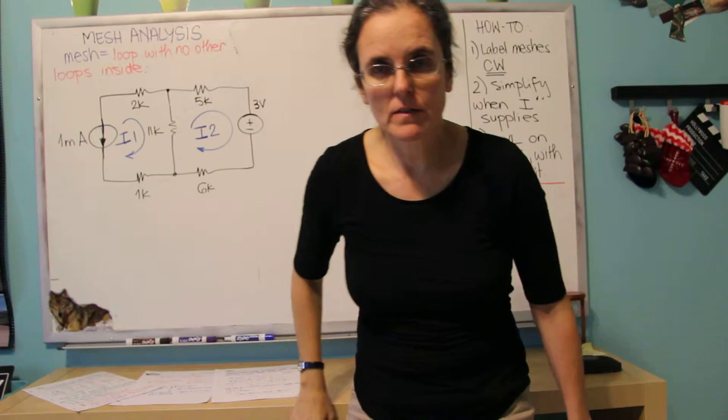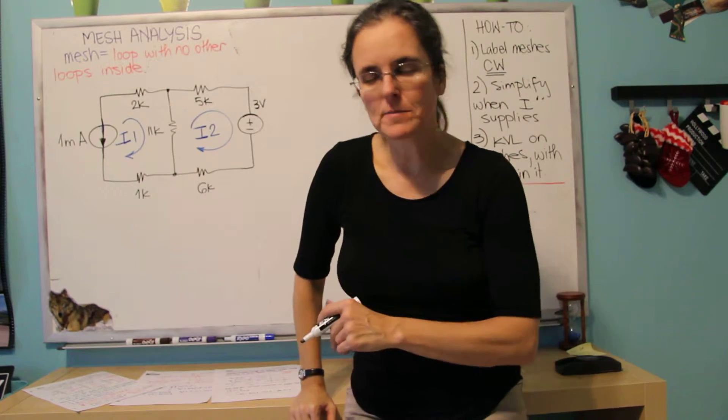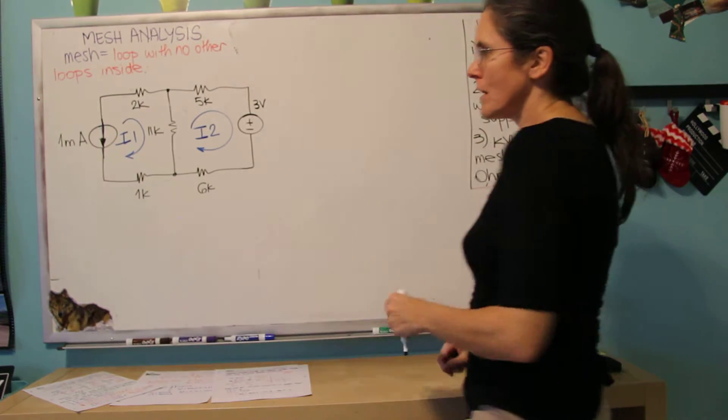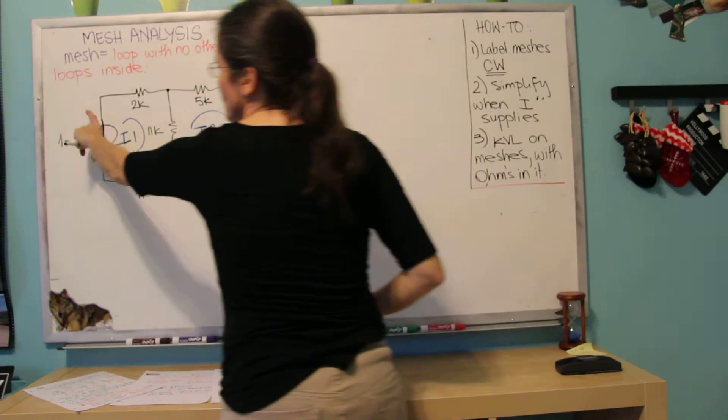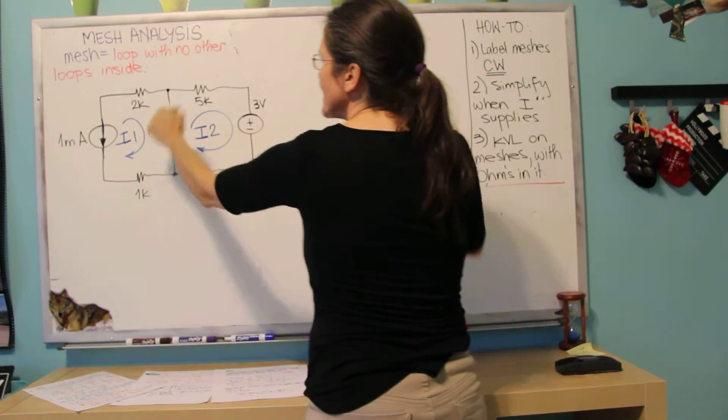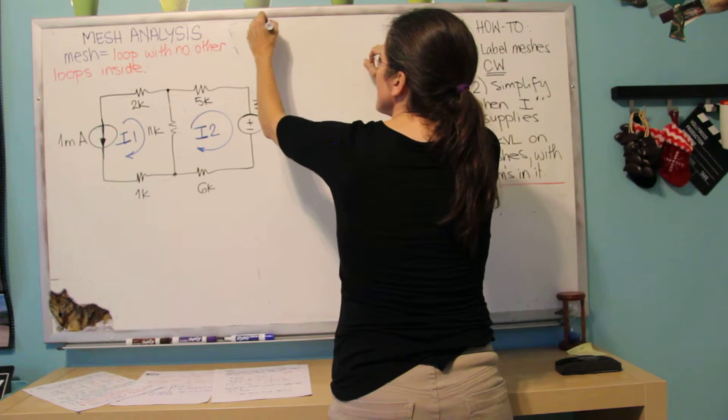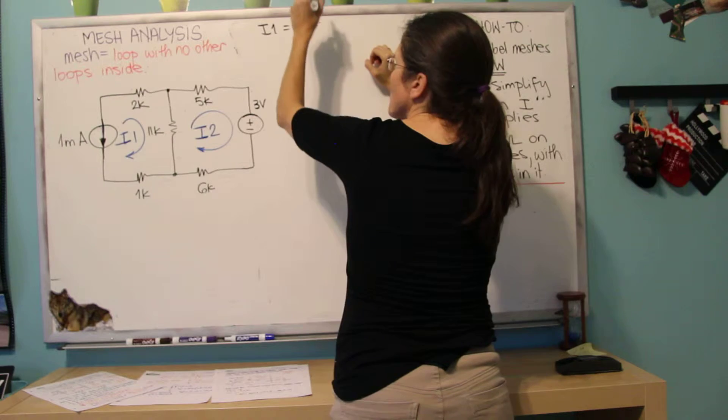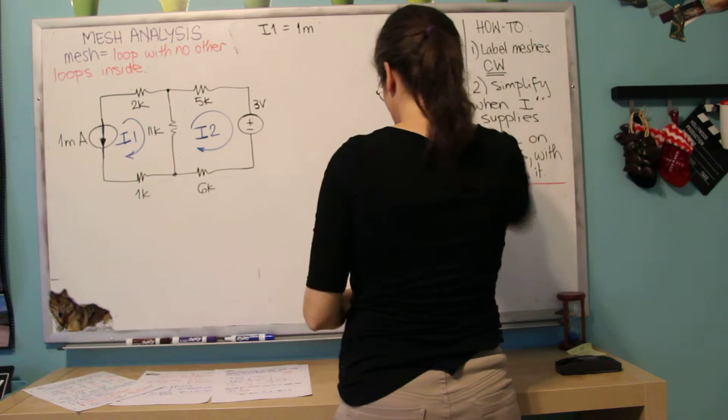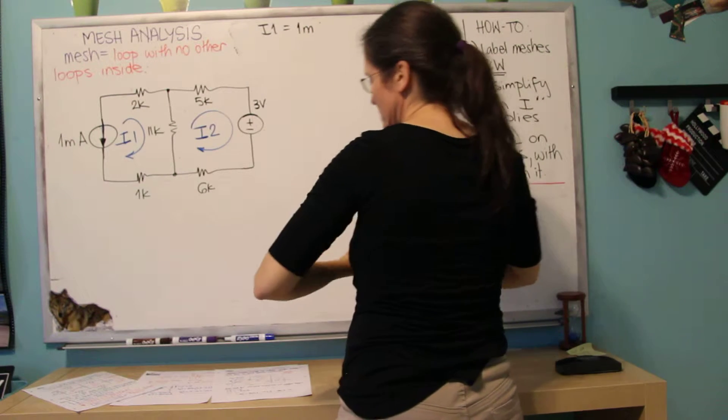And then we look for current supplies, either dependent or independent. If there is an outside current supply, that means it's not connected to any other loop, I already have that I1 defined, so I know that I1 equals 1 milliamp. I1 equals minus 1 milliamp.